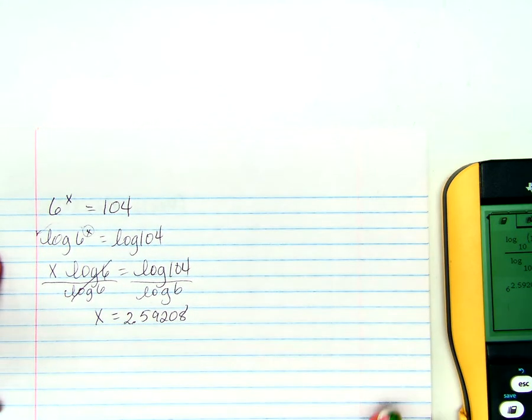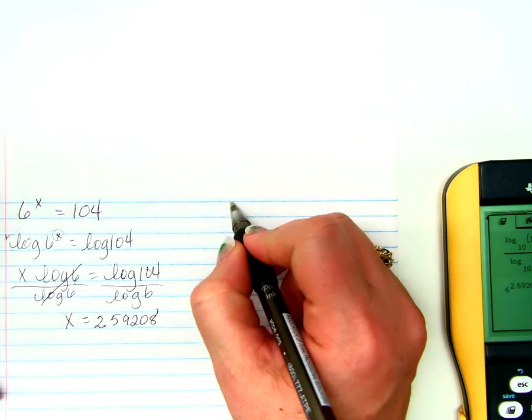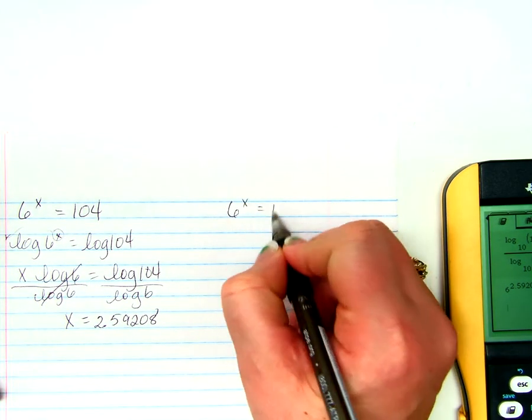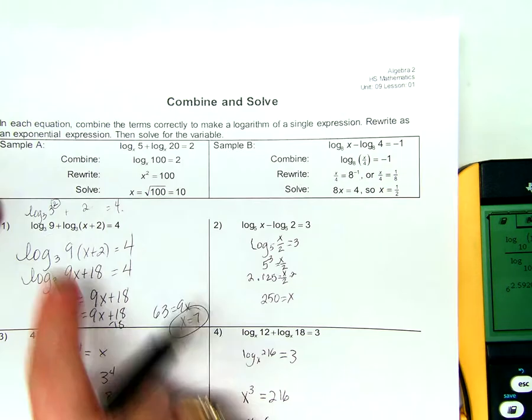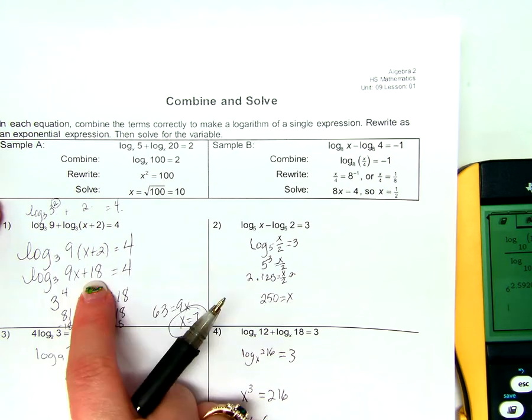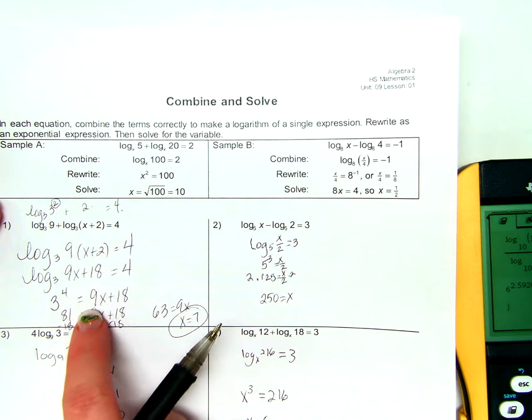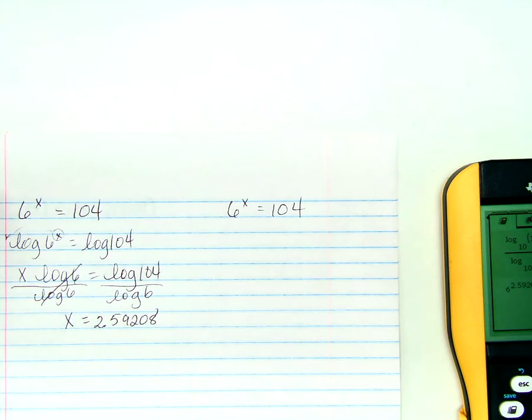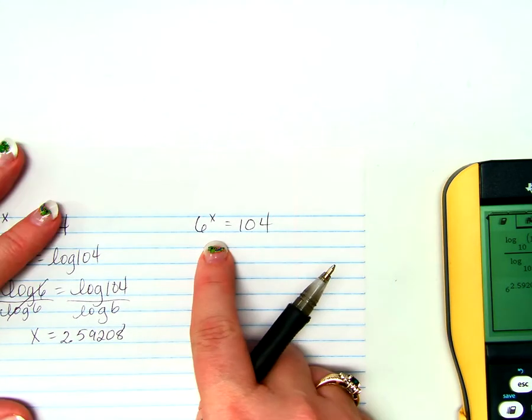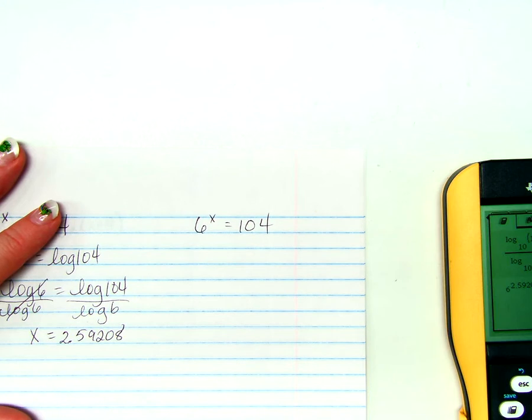Now, that's one way to do this problem. Another way to think about this is, when we did the problems today in class, there was already a log, so we got it simplified as we could, and then we went to exponential form. Well, what if it's already in exponential form? Could we go to logarithmic form? Could we go backwards?